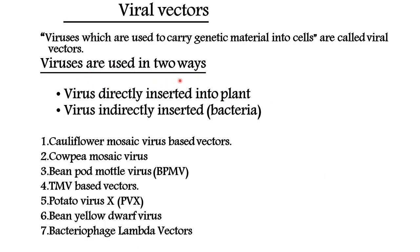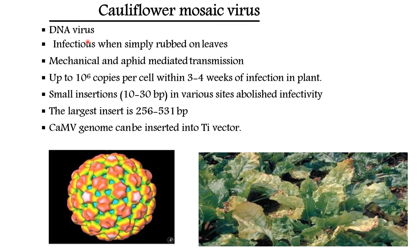Viral vectors are used in two ways: one is the virus directly inserted into the plant, and the other is indirectly inserted using bacteria. Cauliflower Mosaic Virus (CaMV) is a DNA virus that is infectious when rubbed on leaves; it is mechanically and aphid-transmitted. It can produce up to 10^6 copies per cell within three to four weeks of infection. Small insertions of 10 to 30 base pairs in various sites abolish infectivity; the largest insert is 256 to 531 base pairs. The CaMV genome can also be inserted into the Ti vector.